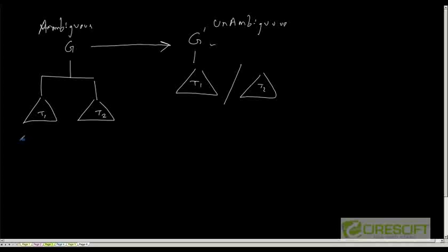Deciding whether a grammar is ambiguous is a hard problem — what we call an NP-hard problem. There does not exist a definite algorithm to decide that a given grammar is ambiguous. But if we can show that for a given input string the grammar creates two different syntax trees, then it is ambiguous. It is even harder to prove that a given grammar is unambiguous.